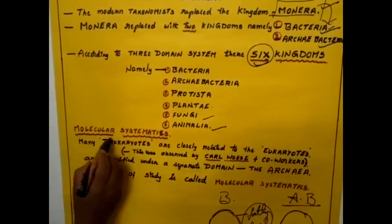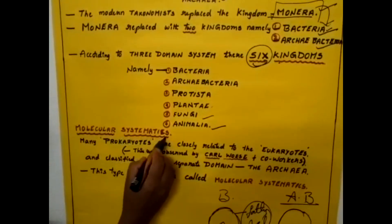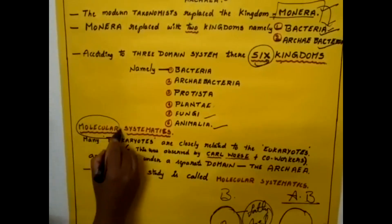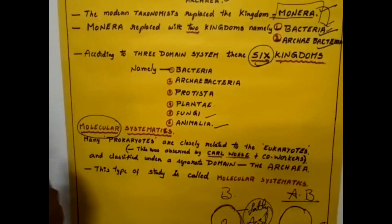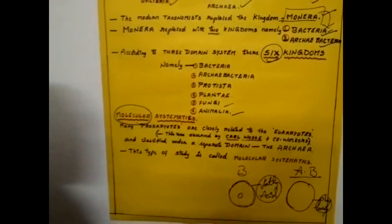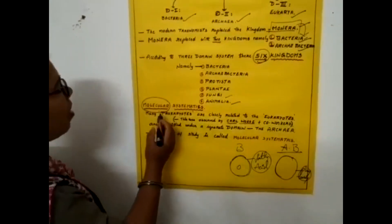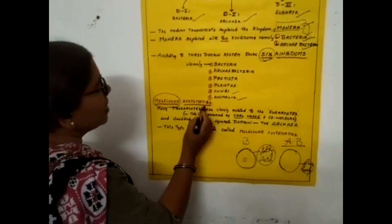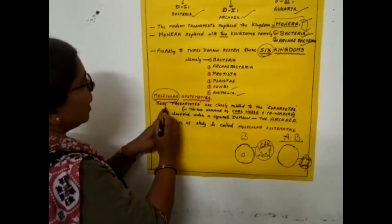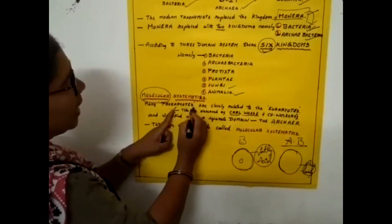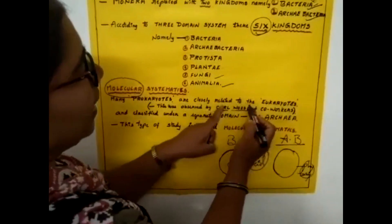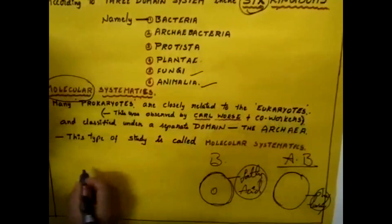The next topic is molecular systematics. Depending upon the molecules which are present in organisms, those are called molecular systematics. It shows that many prokaryotes are closely related to the eukaryotes.